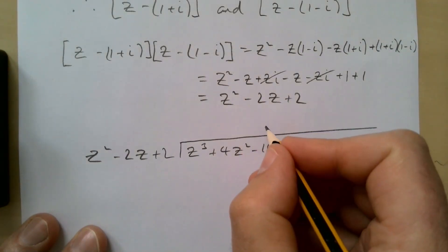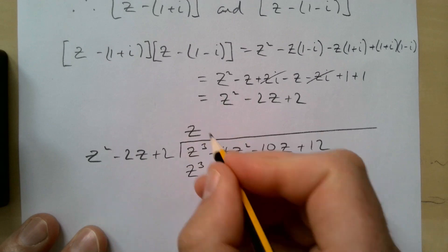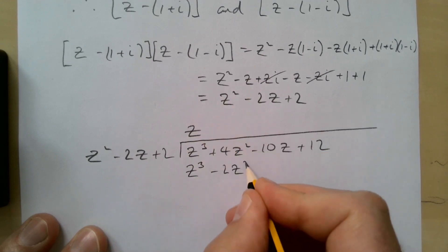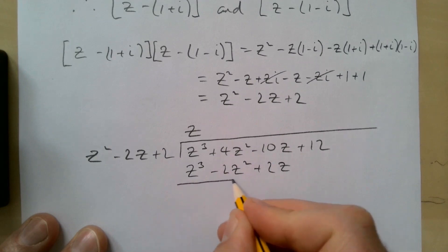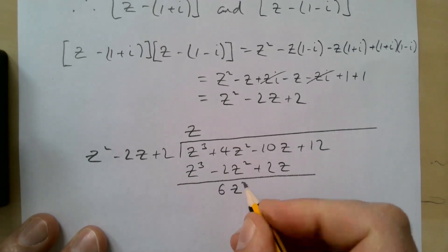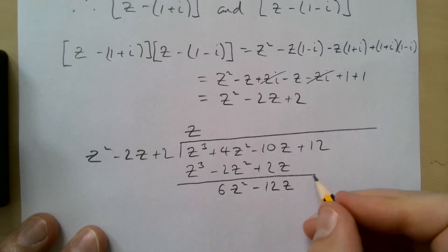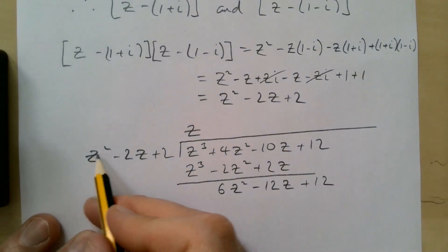Then do z times this: z³ - 2z² + 2z. Subtracting these in, you obviously get zero. 4 minus (-2) gives me 6z². -12z. Bringing down the +12. z² into 6z².